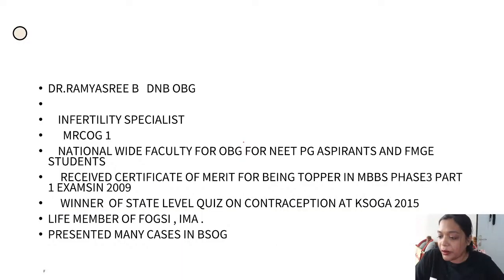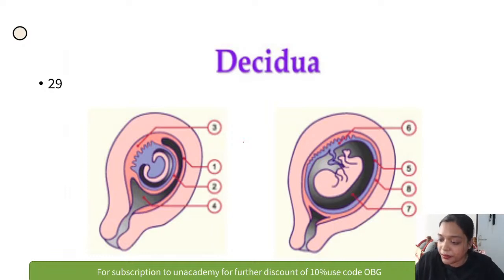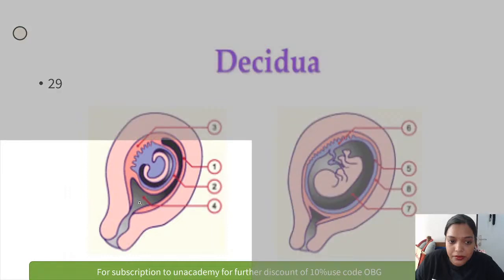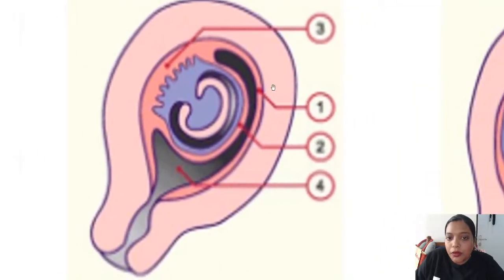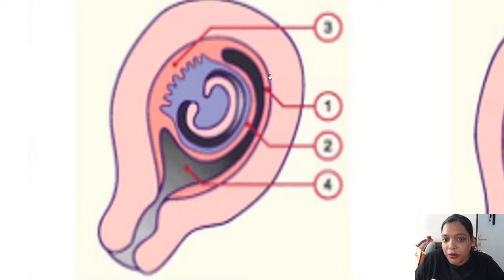I'm Dr. Ramya Sri. We'll start with the first image-based session. The first image I'm going to discuss — I want you to name the structures you're seeing here. What is number one? What is this layer labeled as number one?